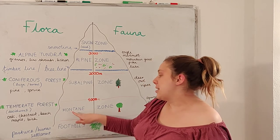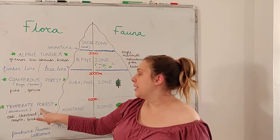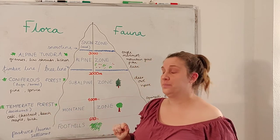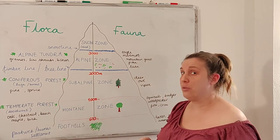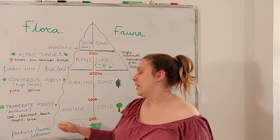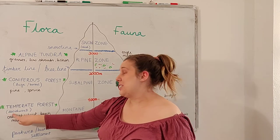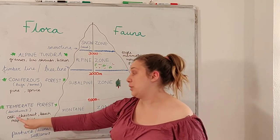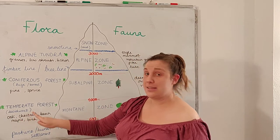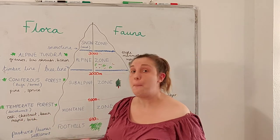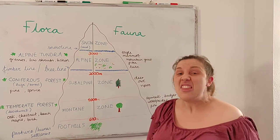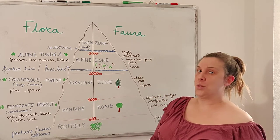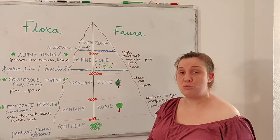When we get to the montane zone, it will be largely temperate forest, sometimes called deciduous. So those are trees like oak, chestnut, beech, maple, and birch — the trees that drop their leaves in the autumn and then have new leaves in the spring.